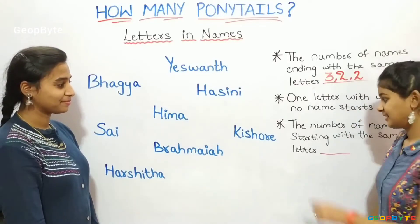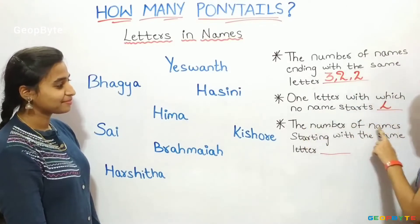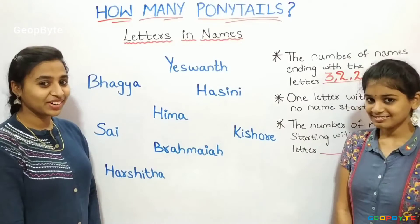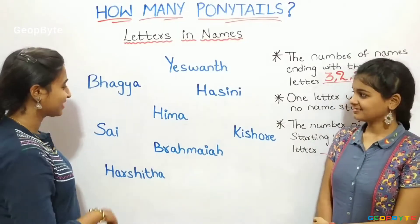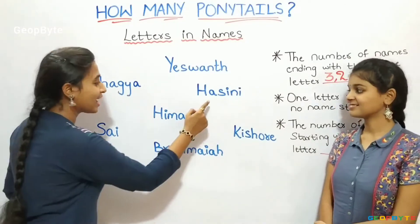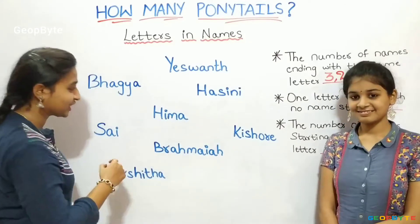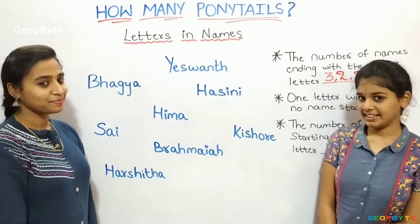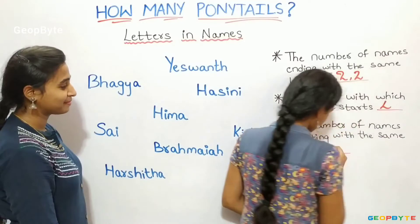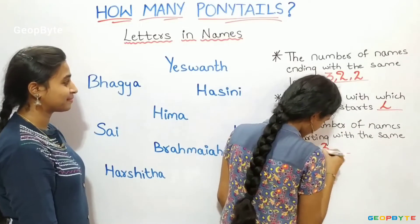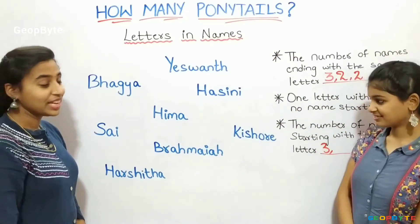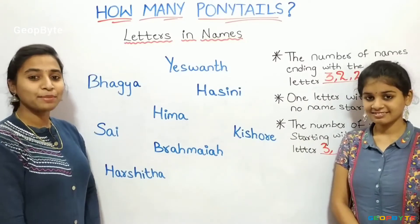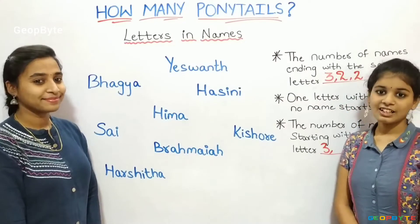Last question: the number of names starting with the same letter. Let us see, children. We have Hasini, Himar and Harshita starting with the same letter H — let us write 3. We have Bagya and Brahmaya starting with the same letter B — let us write 2.